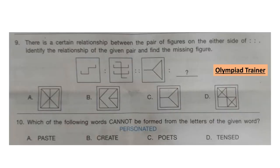Question 9: There is a certain relationship between the pair of figures on either side. Identify the relationship of the given pair and find the missing figure. Looking at the first two figures, the relationship is that the first figure is embedded in the second figure. So you have to find the figure in which the third figure will be embedded. The correct answer is option C.